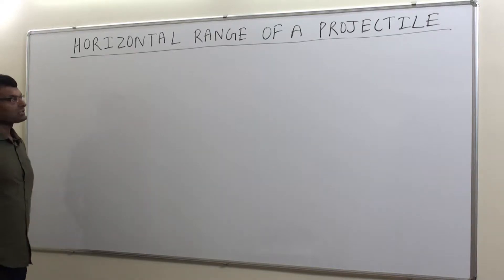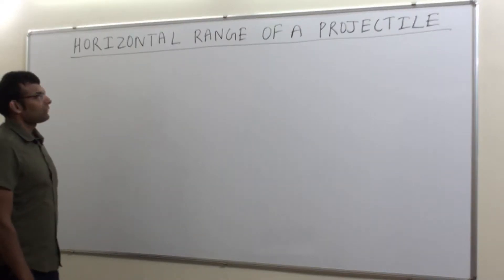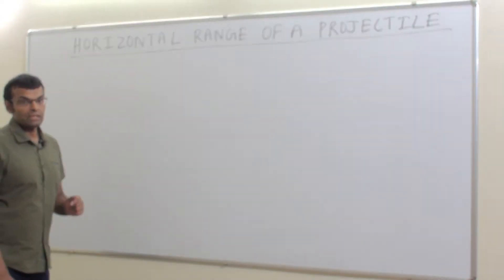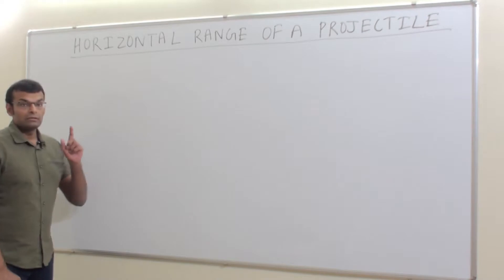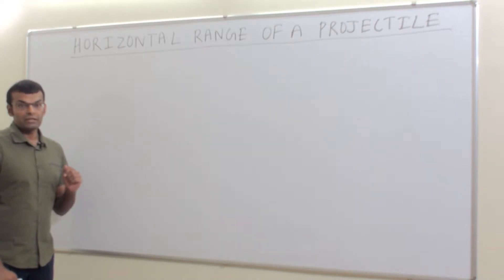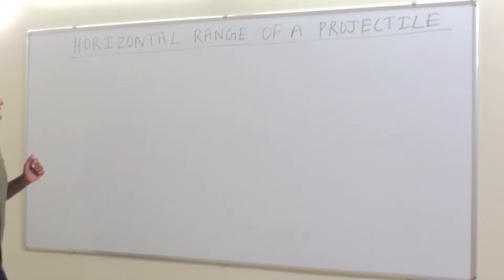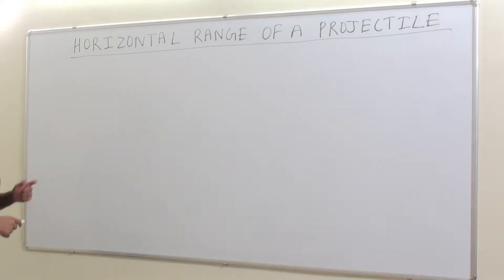In the previous class, we discussed the time of flight of a projectile and the maximum height reached by a projectile. In this class, we will be looking at the horizontal range of a projectile.